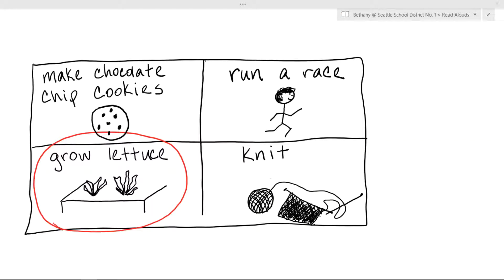In our last lesson, we each thought about four things that we could write a how-to book about. We talked about when we write a how-to book, the purpose of the book or the reason that we write the book is to teach someone how to do something. So when we choose a topic for a how-to book, it should be something that we know a lot about or something that we have done lots of times.